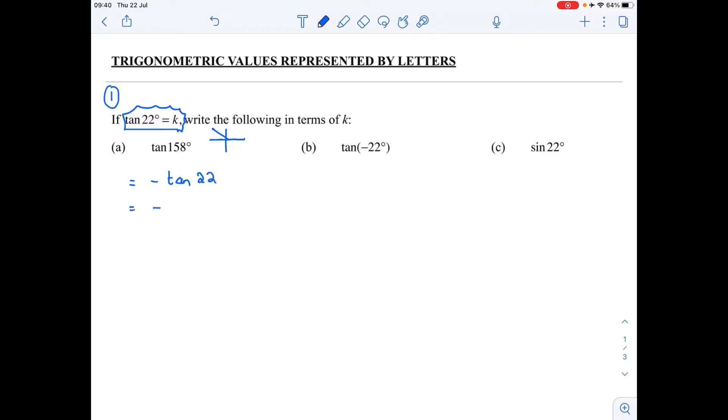But we know that tan of 22 is equal to k because we're given it there. So therefore my answer is minus k. I've written tan of 158 in terms of k. My answer only has k in it. Sorted.